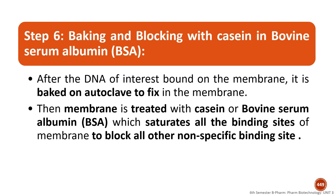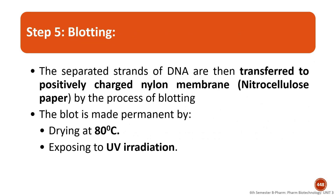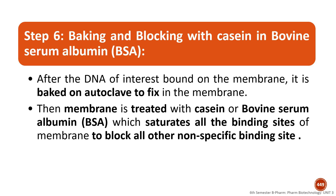The sixth step is baking and blocking with casein or bovine serum albumin. The membrane is fixed, and nylon fibers are used to transfer the DNA of interest. The membrane is treated with casein or bovine serum albumin, which saturates all the binding sites of the membrane to block all non-specific binding sites, ensuring only the complementary single-stranded DNA can bind.